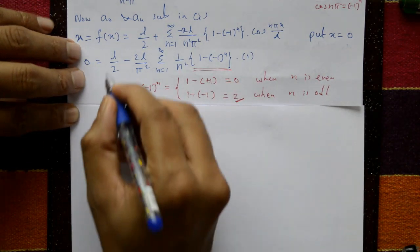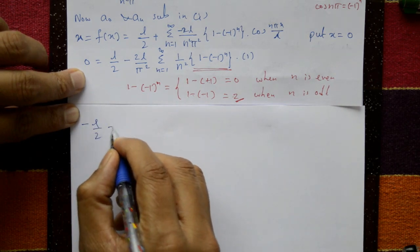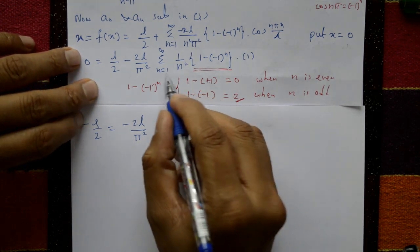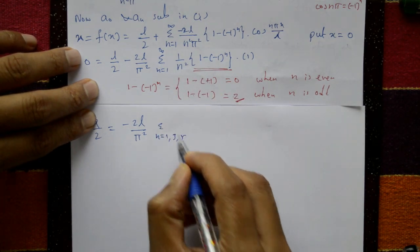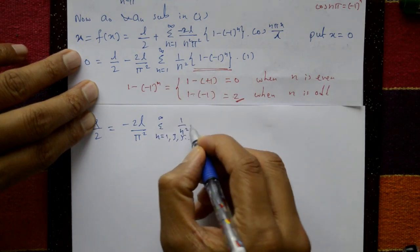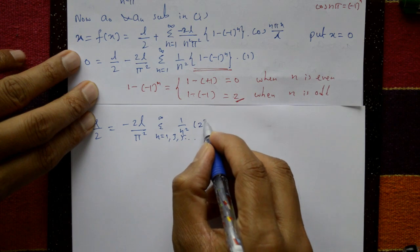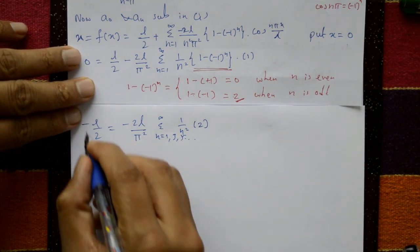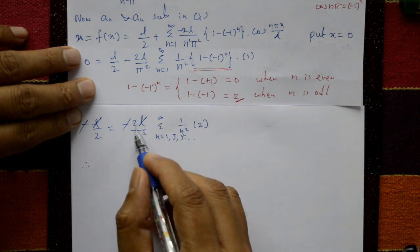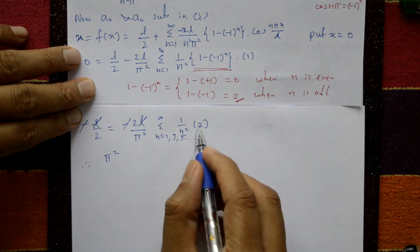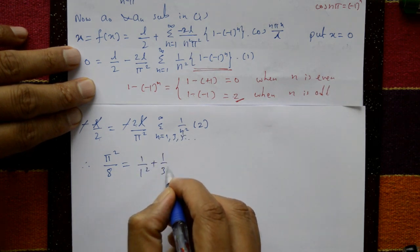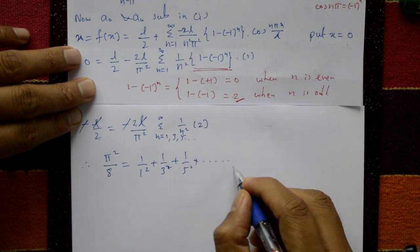Shifting l/2 to the left side: minus l/2 = minus(2l/π²) summation over odd n=1,3,5,... of (1/n²)·2. The minus signs cancel and one l cancels each side. Cross multiplying: π²/8 = summation n=1,3,5,... of 1/n². That is: π²/8 = 1/1² + 1/3² + 1/5² + ... which is the required series.